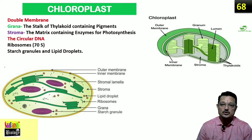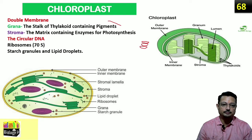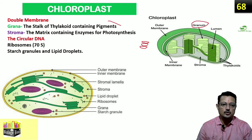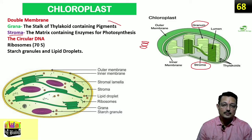The chloroplast can be divided into two parts. Looking at the 3D diagram, you can see stacks like stacked coins — each disc-like structure is called a thylakoid, and the whole stack is called a granum. Two grana are connected by lamellae. The other part is the stroma — the matrix — which contains enzymes for the light-independent reaction of photosynthesis.